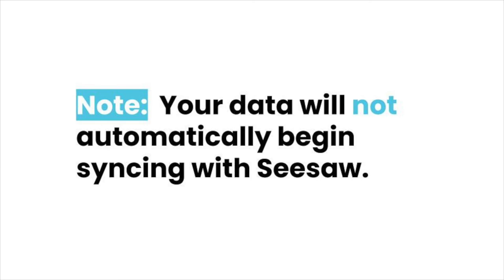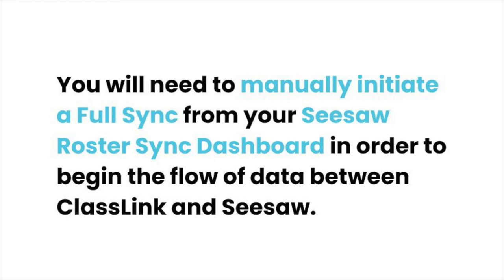Once your data in ClassLink is accurate and ready, you can reach out to Seesaw Support to have our team review your data. For your data to begin syncing with Seesaw, you will need to manually initiate a full sync from your Seesaw RosterSync dashboard. This begins the flow of data between ClassLink and Seesaw. Once your first sync is complete, data in ClassLink will be exactly matched in Seesaw.